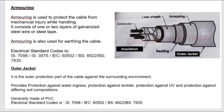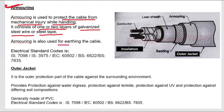After the bedding, the next protective layer is armoring. Armoring is used to protect the cable from mechanical injuries while handling. It consists of one or two layers of galvanized steel wire or steel tape. Armoring is also used for earthing the cable. Electrical standard codes are IS 7098, IS 3975, IEC 60502, BS 6622, and BS 7835.